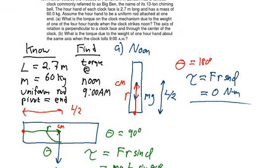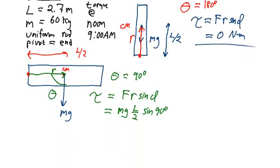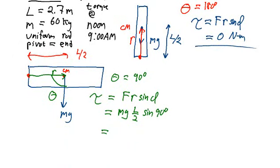So we need to go back and find our numbers, so we have 60 kilograms and 2.7 meters, so we have 60 times 9.8 times 2.7 divided by 2 times the sine of 90, which is 1. So when we work that out on our calculator, 60 times 9.8 times 2.7 divided by 2 equals 794, and the units of that torque would be newtons times meters.